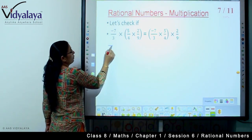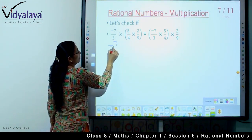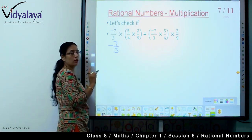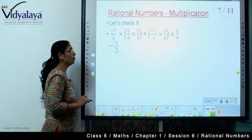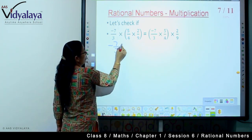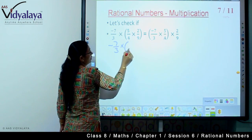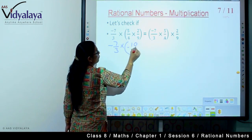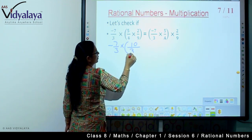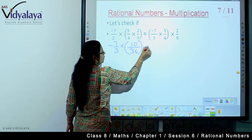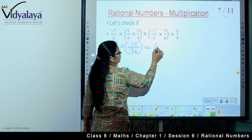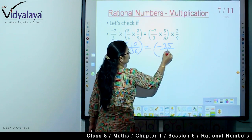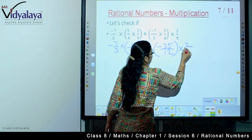Now we look for multiplication. Quick recap: A upon B into C upon D. How do we multiply? Numerator times numerator gets multiplied and denominator times denominator gets multiplied. So let us solve the sum.